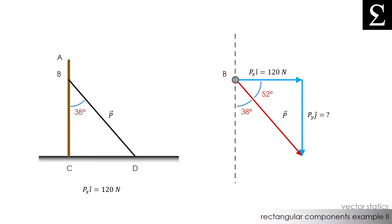Now, the first thing we need to do is to find the vertical component, Py. Since the components of P make a right triangle with force P, we can use trigonometry to solve for Py.